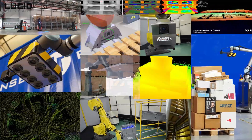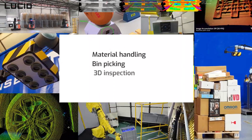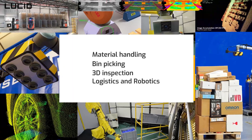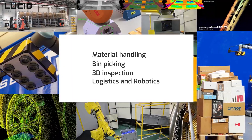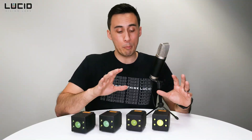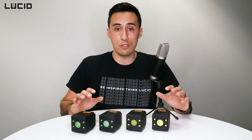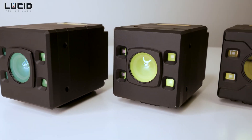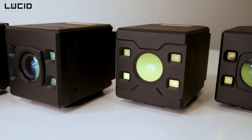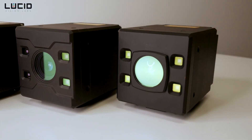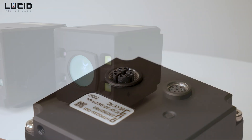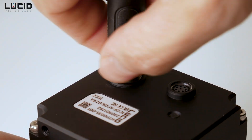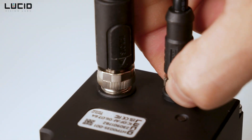For those new to the Helios II 3D camera family, these popular models are used in a variety of industrial applications such as material handling, bin picking, 3D inspection, logistics, and robotics. One important point is that each model is a complete self-contained unit — the lens and VCSEL laser diodes are integrated and can't be changed, as it takes significant engineering to calibrate all components together. You simply need cables to connect to the Helios II to get started.